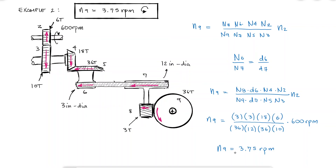If you want to check out other problems related to gear trains and planetary trains, make sure to check out the links in the description below. In the next video, we will start looking at the interaction forces between the different types of gears, including how to calculate their components and what each one of them does to the system.